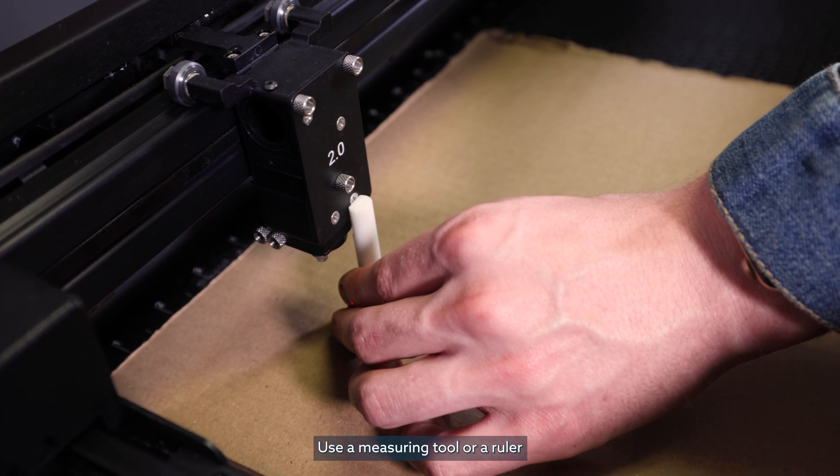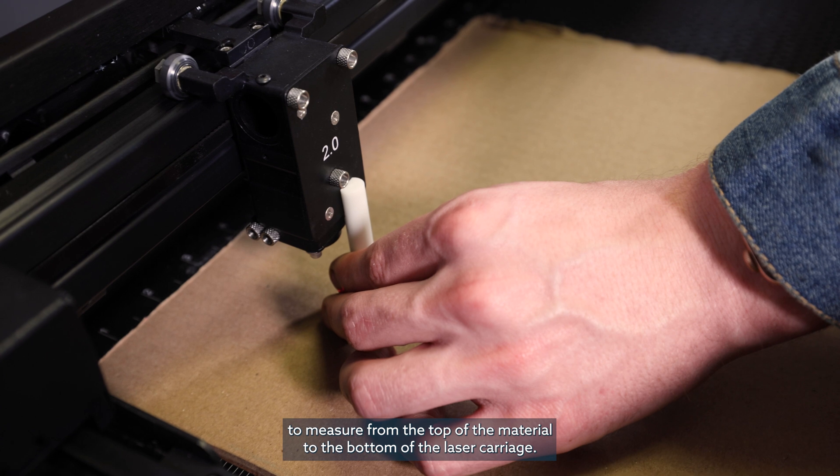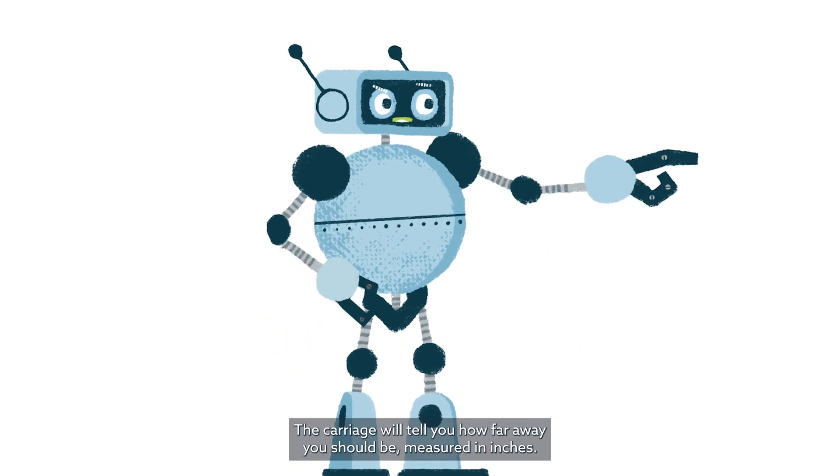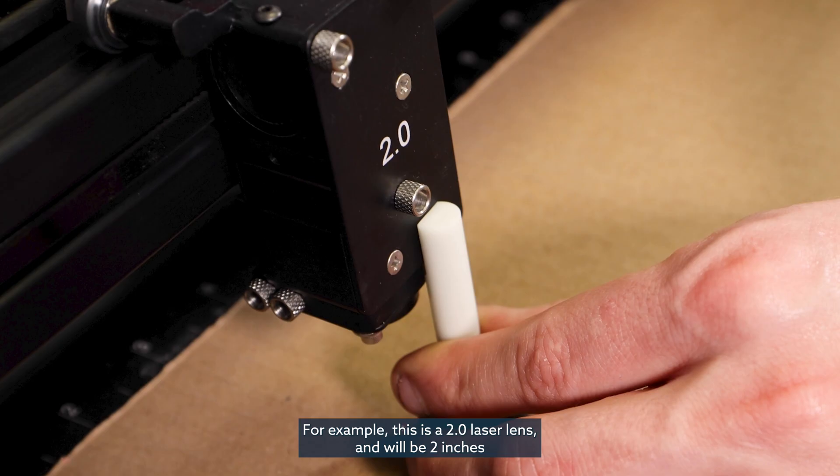Use a measuring tool or ruler to measure from the top of the material to the bottom of the laser carriage. The carriage will tell you how far away you should be, measured in inches. For example, this is a 2.0 laser lens and will be two inches between the material and the carriage.